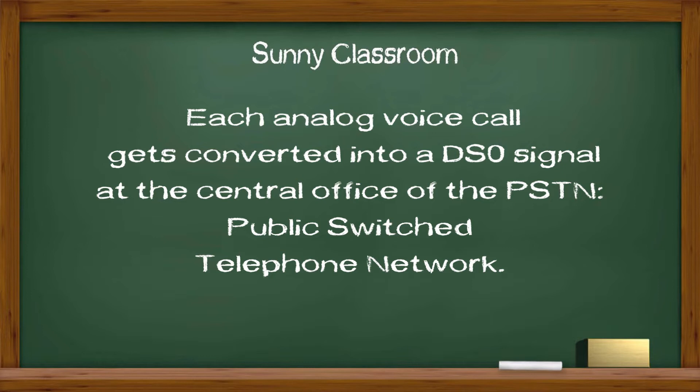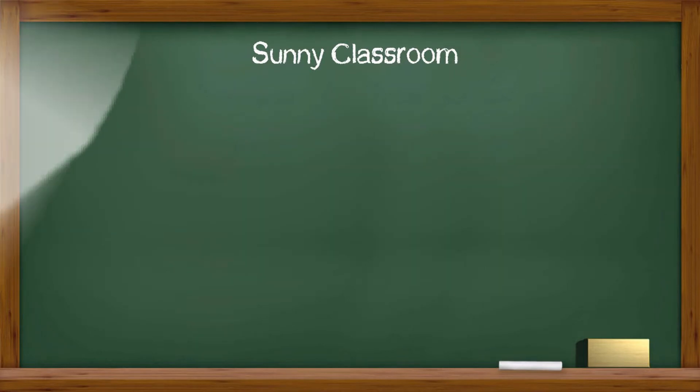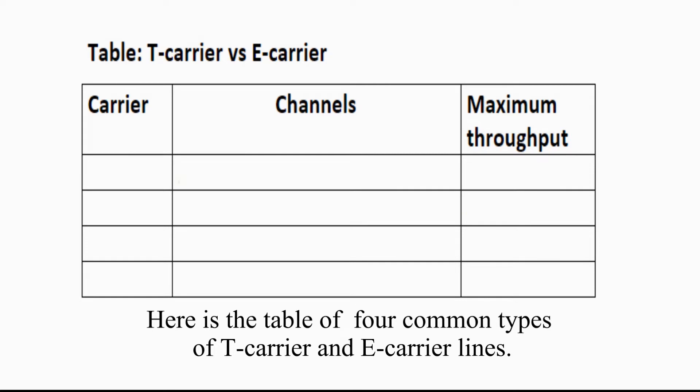This conversion happens at the central office of the PSTN, or Public Switched Telephone Network. The DS0 rate also forms the basis for T-carrier, E-carrier, SONET, or SDH, which we will talk about in a separate video.